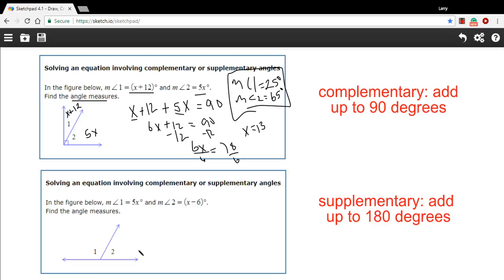Let's try another one. This one, the angles are supplementary. You can see there's a straight line down on the bottom here. So these two angles are going to add up to 180 degrees. Angle 1 is 5x. And angle 2 is x minus 6. We're going to set up an equation in exactly the same way, except we're going to set it equal to 180 instead of 90. So 5x plus x minus 6 equals 180.